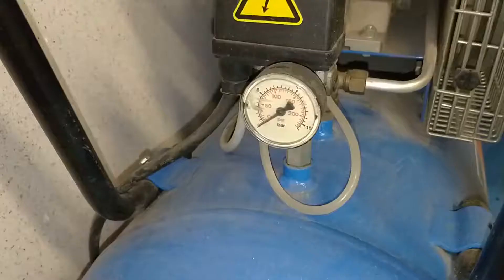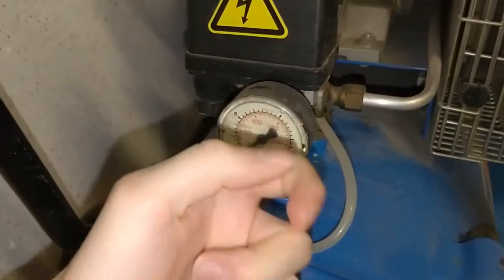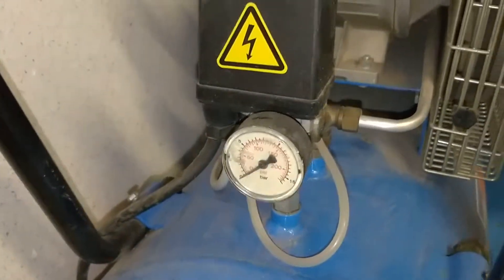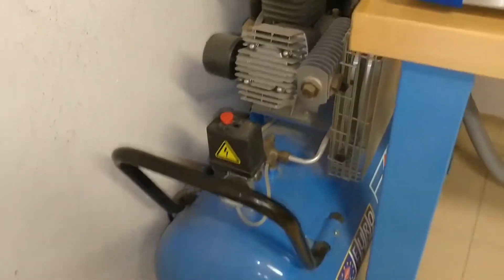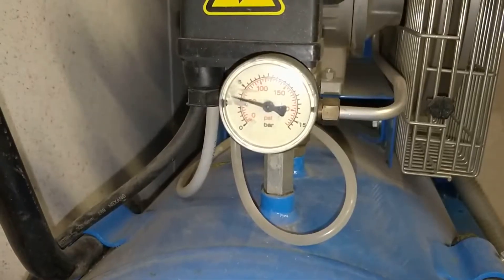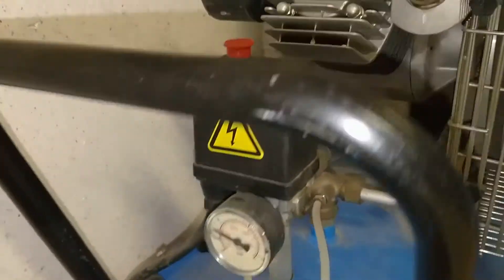Before starting, check the air supply. In this case our air compressor had no pressure left so we had to start it up. Three to four bars of pressure should be plenty so we stopped it there.